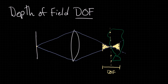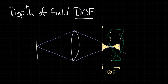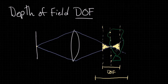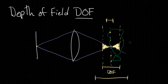This whole area in here is what becomes in focus. Now we want to know how we can control that. If we want a wider depth of field, we need to make sure that this light is not spreading out too fast. If we want a shallower depth of field, we want to make sure the light spreads out fast enough so that by this point it's now too spread out for us to consider it in focus. Let's take a closer look and see what's actually happening, and then we'll understand how we can control it.